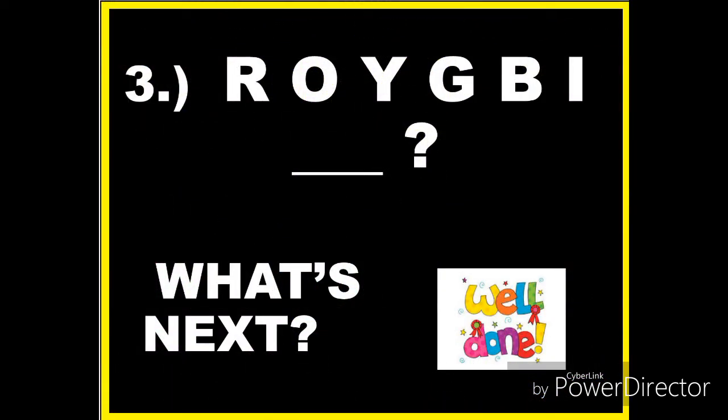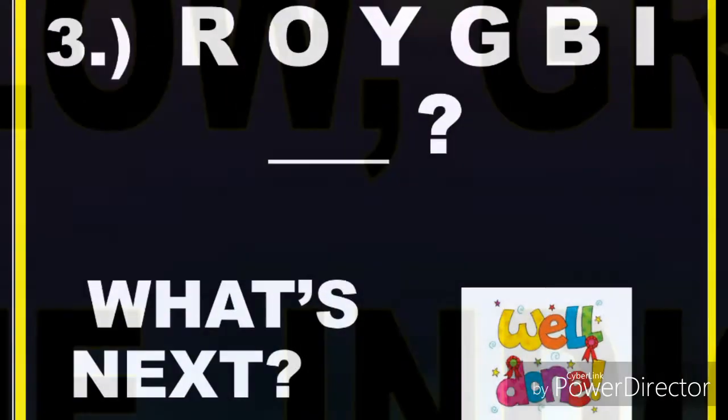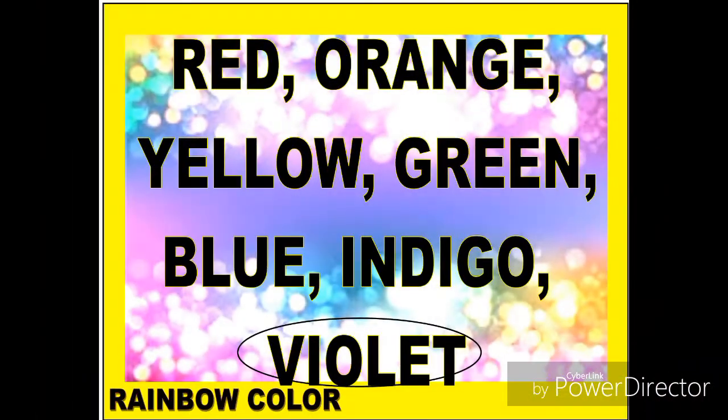Now the next sequence is R, O, Y, G, B, I. What's next? The clue is these are colors. R stands for red, O for orange, Y for yellow, G for green, B for blue, I for indigo. And the next one is V for violet.